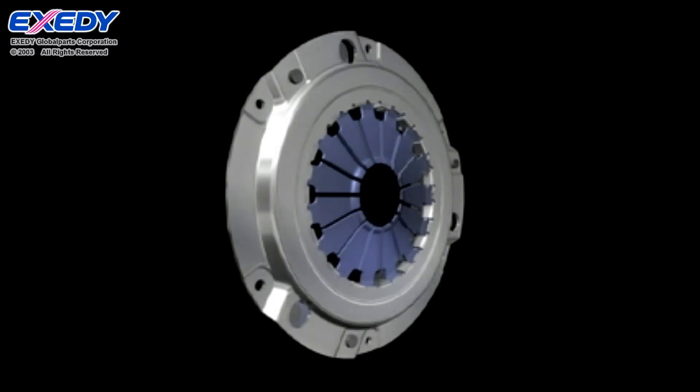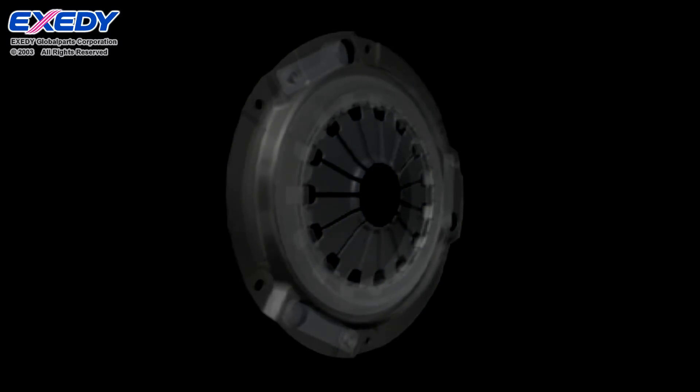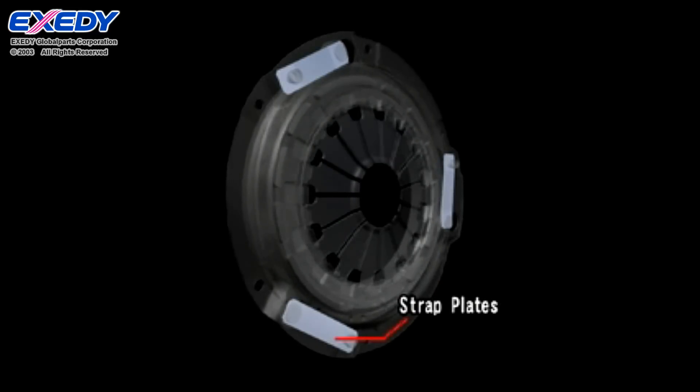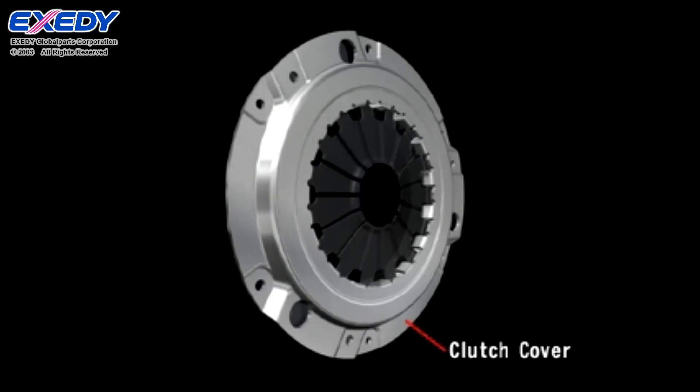The other parts that comprise the clutch cover assembly are wire rings that serve as the fulcrums for operation of the diaphragm spring, strap plates that secure the pressure plate, and the clutch cover itself, which contains all of these parts.